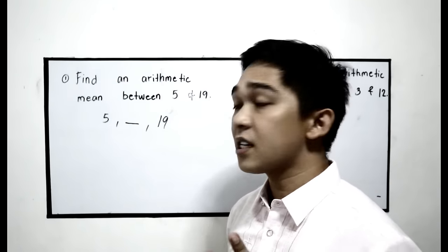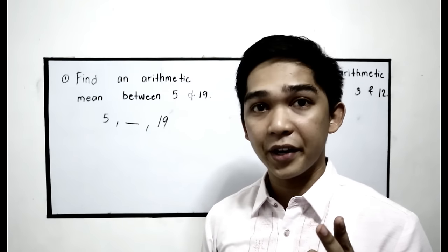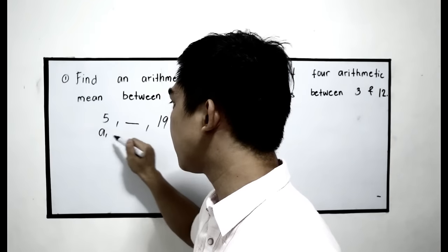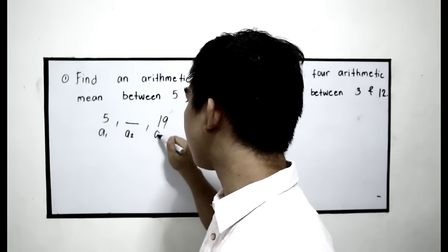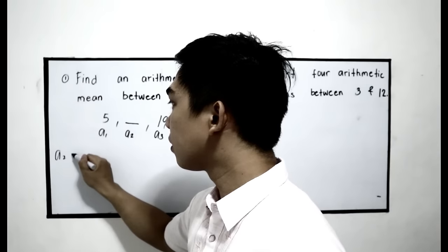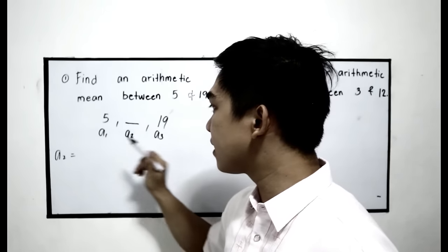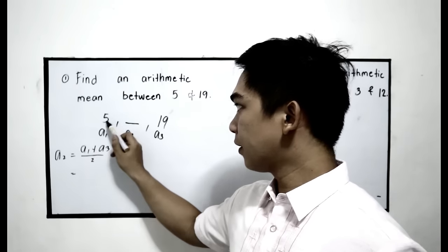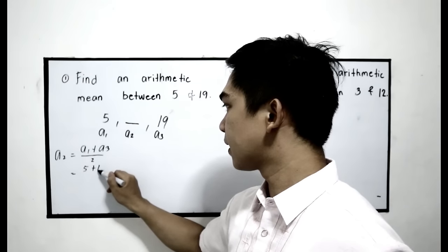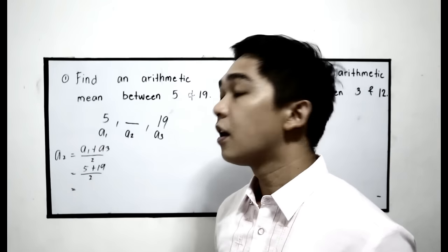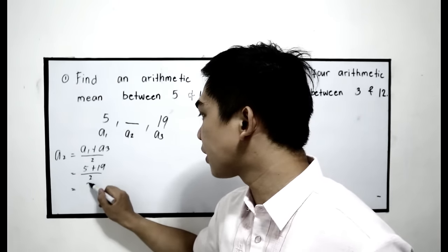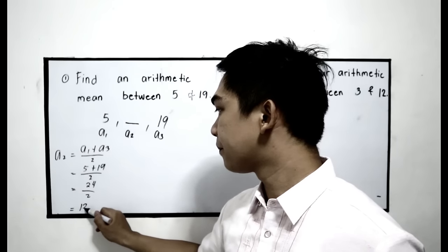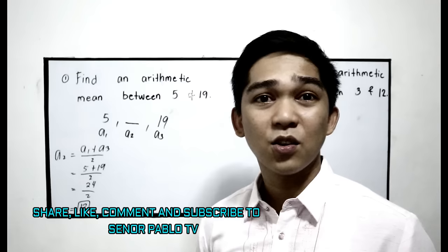Since the mean is the average, we can just add the two numbers. This will be a1, a2, and a3. To find a2, we can simply add a1 plus a3 divided by 2. That is 5 plus 19 divided by 2. 5 plus 19 is 24 over 2, which becomes 12.